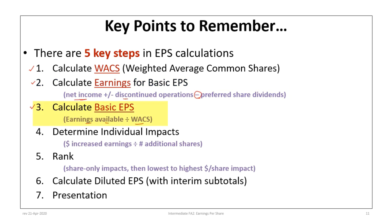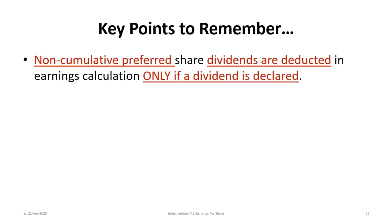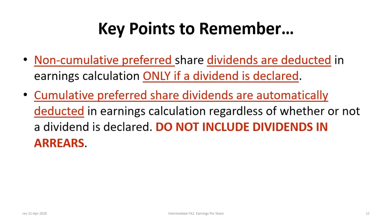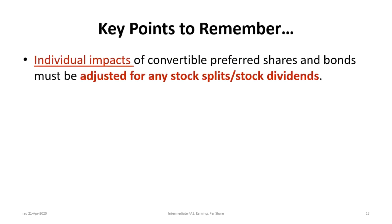Third, calculate basic EPS: earnings available divided by weighted average common shares. Fourth — and this is critical — calculate the individual impacts of each potentially dilutive item. Look at the increased dollar earnings divided by the number of additional shares. Rank them: share-only impacts (options, rights, warrants, or non-cumulative preferred shares with no dividend declared) go first; then rank remaining items from lowest to highest per-share impact. Sixth, calculate diluted EPS with interim subtotals, then show the presentation.